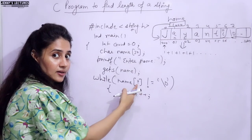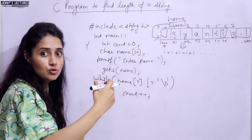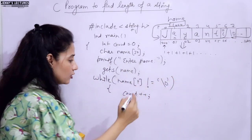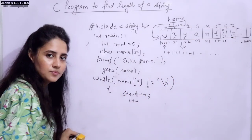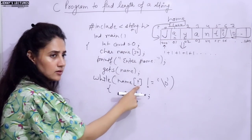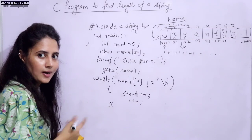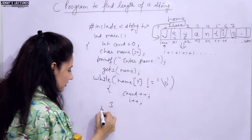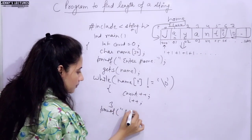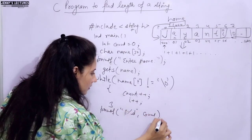The index i starts at 0, then 1, then 2 - it also increases. We need i++ so we go through name[0], then name[1], then name[2], and so on. After this while loop we print printf with %d and count, and that gives us the string length.